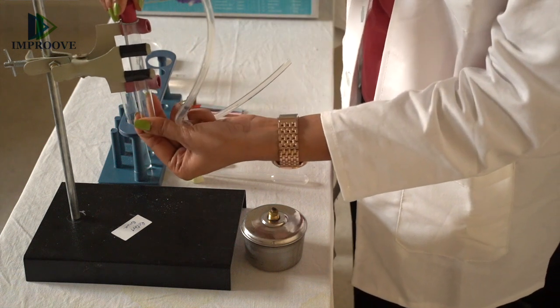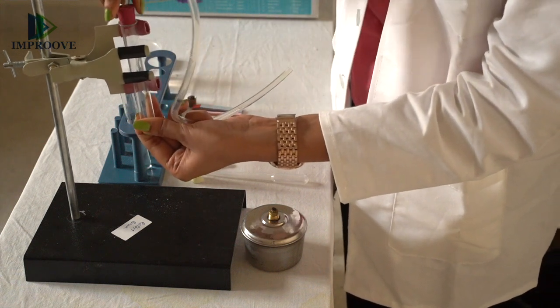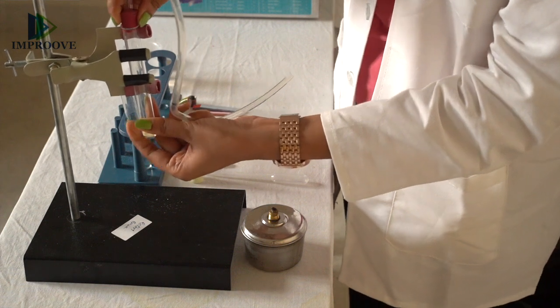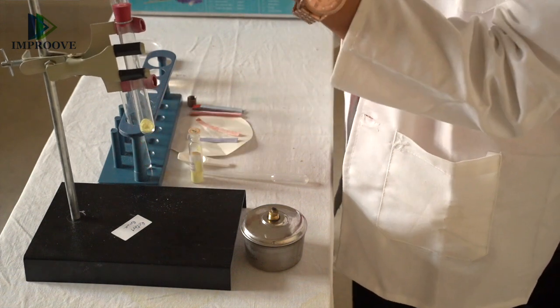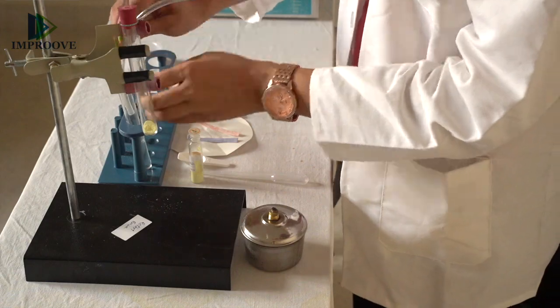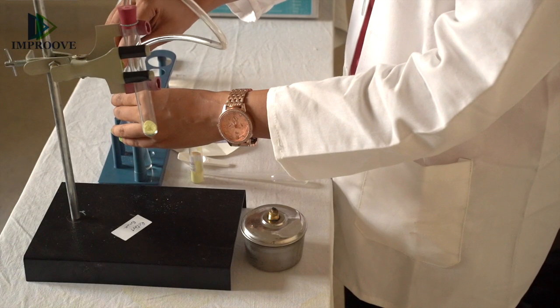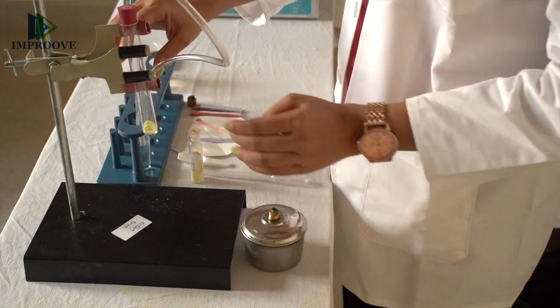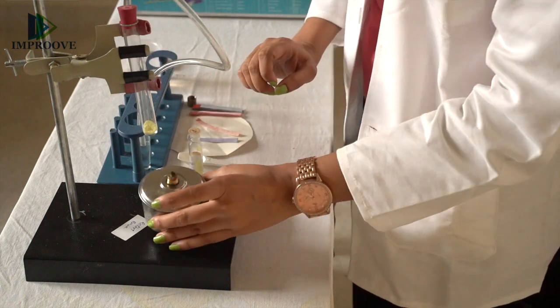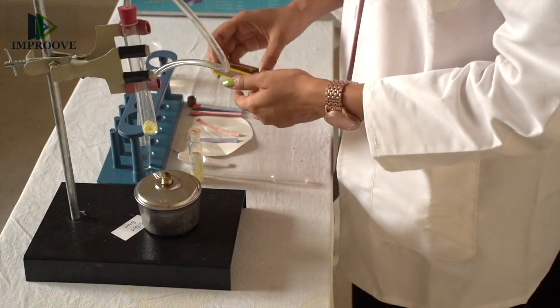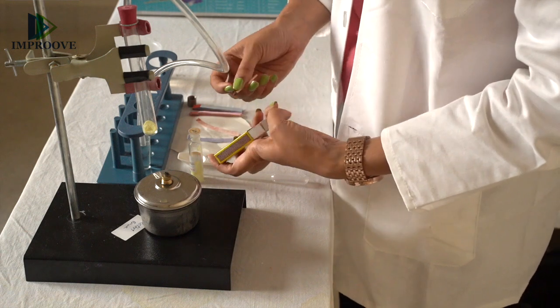Close the mouth of the test tube with the cork, and place the other end of the delivery tube inside the test tube with water. Now light the spirit lamp and allow the sulphur powder to heat.